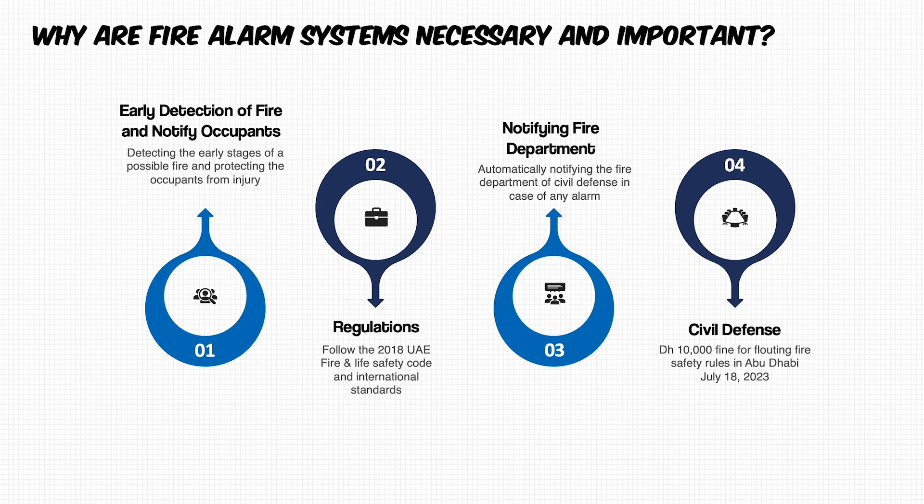Fire alarms provide early detection of fire and protect fire equipment. By having smoke detectors, heat detectors, and other initiating devices, we can detect fire in the early stages. The sounders allow people to know about the fire early and have a chance to evacuate the building.